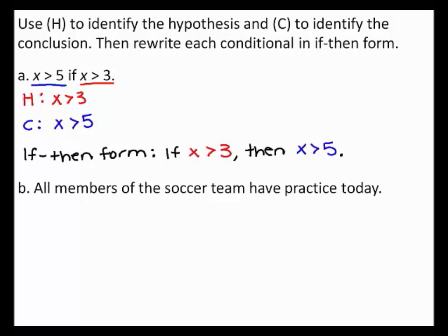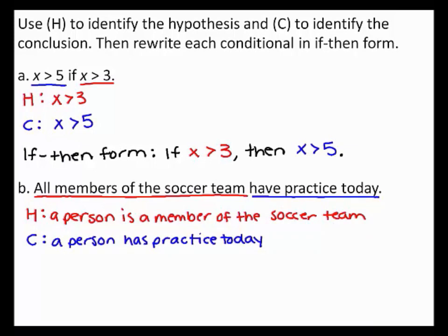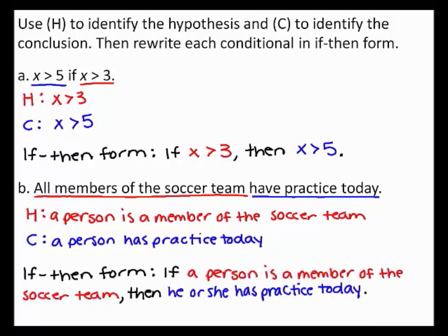For the statement in part B, being a member of the soccer team implies that you have practiced today. So the hypothesis is a person is a member of the soccer team, and the conclusion is a person has practiced today. Therefore, rewritten in if-then form: if a person is a member of the soccer team, then he or she has practiced today.